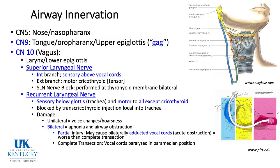For airway innervation: to do a nasal intubation, you'd block cranial nerve five, which supplies the nose and nasopharynx. The tongue, oropharynx, upper epiglottis, and gag reflex are cranial nerve nine. Everything else is supplied by cranial nerve ten, the vagus nerve. The superior laryngeal nerve and recurrent laryngeal nerve are branches of the vagus, innervating from the epiglottis down through the airway. Cranial nerve ten supplies most airway innervation.